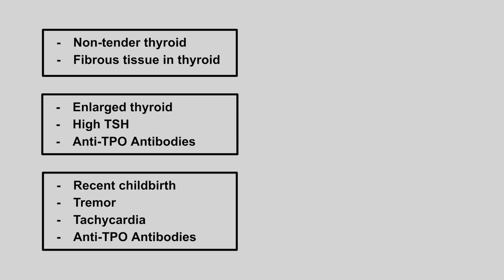The next patient has a non-tender thyroid and fibrous tissue in the thyroid. This is Riedel thyroiditis, and the key here is the fibrosis.